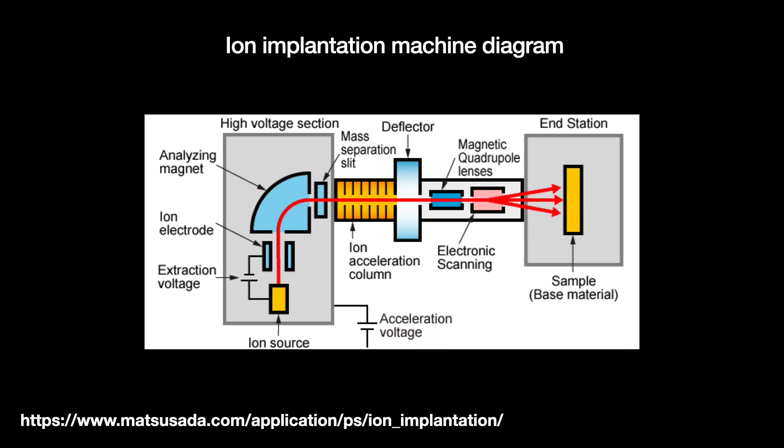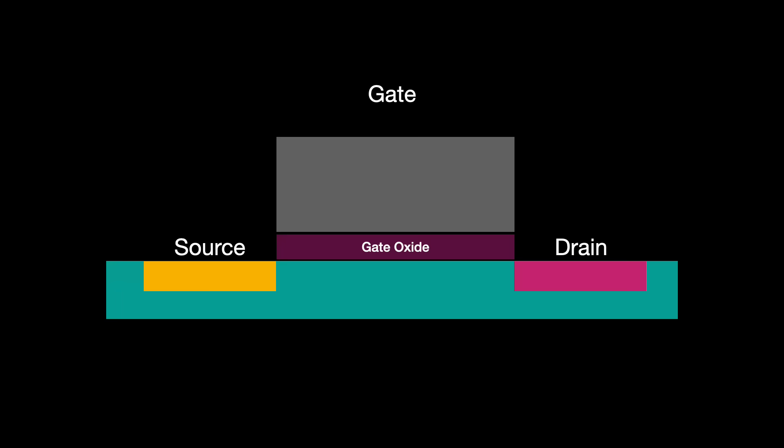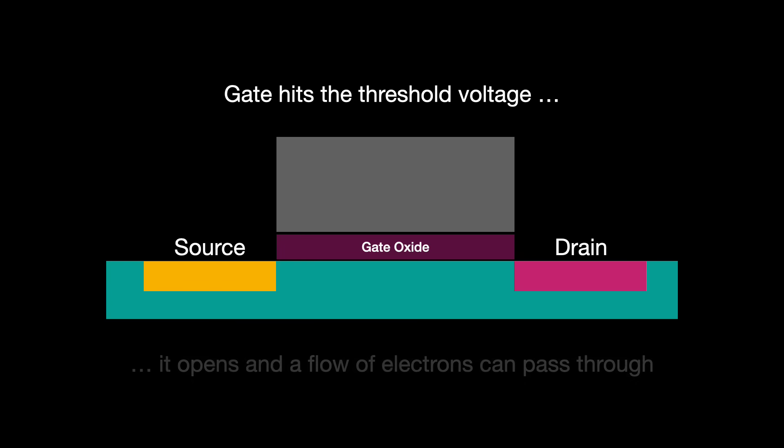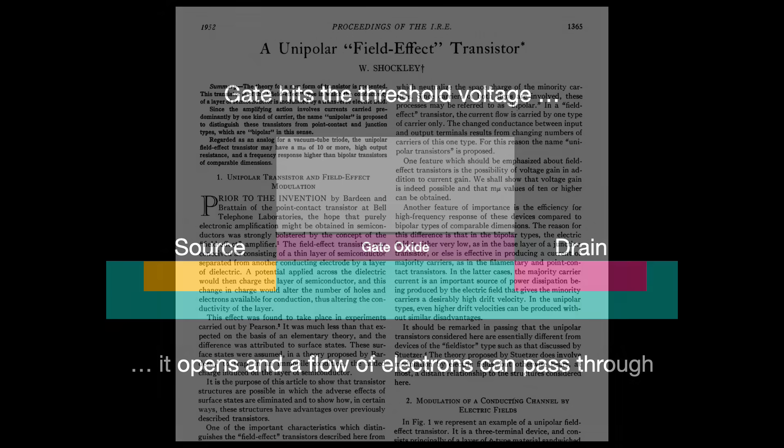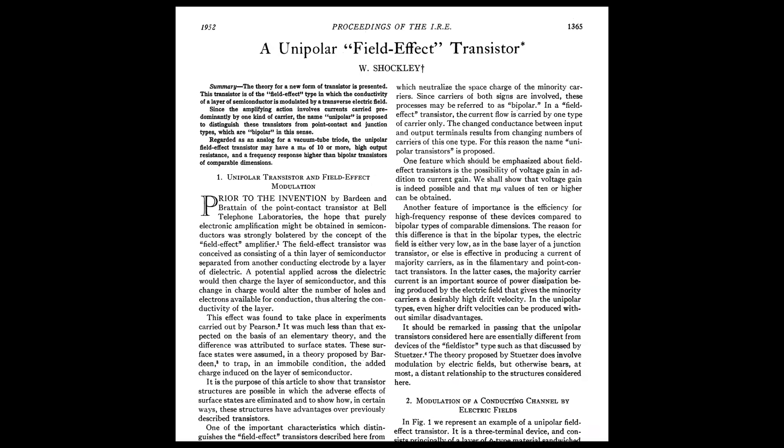In between the source and drain, we have the gate and the gate oxide. These sit on top of the channel and control it through a phenomenon known as capacitive coupling. When the gate receives a certain voltage, referred to as the threshold voltage, it turns on or opens. This allows the flow of electrons or electron holes from the source to the drain along the channel. This control of a material's ability to conduct such particles is known as the field effect. And this is how the semiconductor gets its name. The semiconductor material conducts only part of the time.